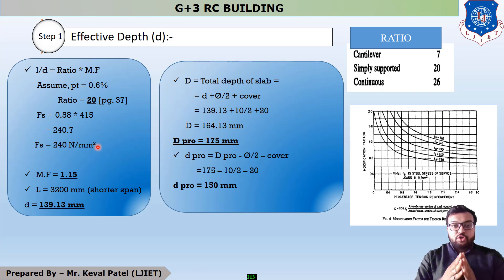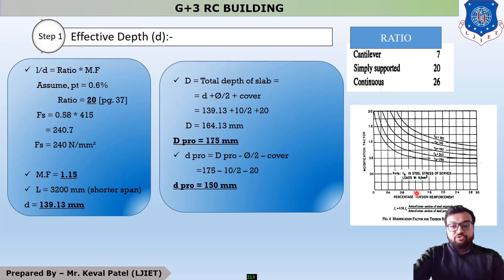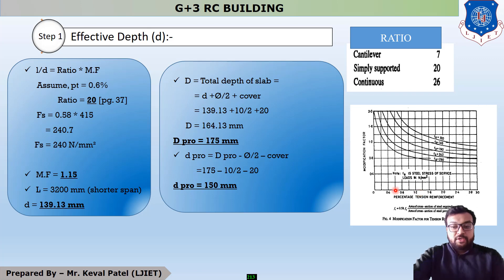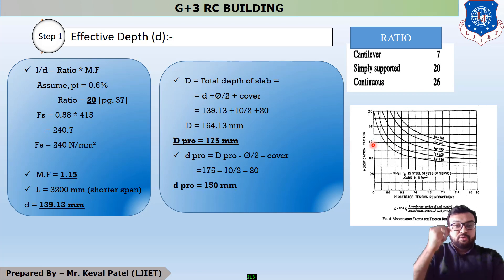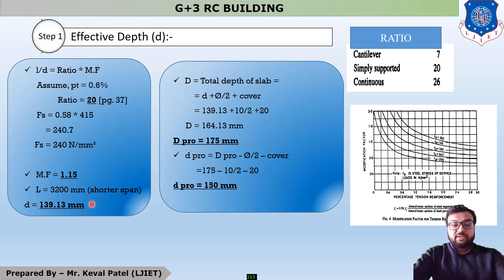Using the fourth graph, with PT = 0.6 (midpoint between 0.4 and 0.8) and FS = 240, we draw an imaginary vertical line at the intersection point, which falls just below 1.2. Therefore, the value of modification factor MF is 1.15.